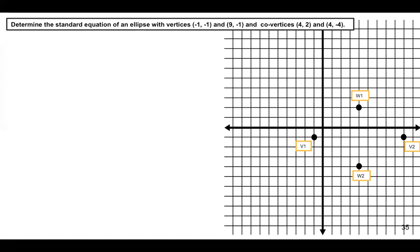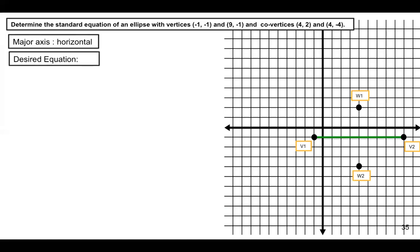To determine the standard equation of an ellipse, we need to identify the orientation of its major axis. Observe that connecting the vertices (negative 1, negative 1) and (9, negative 1) forms the major axis. This means the major axis of the ellipse is horizontal, so we use the equation (x minus h) squared over a squared plus (y minus k) squared over b squared equals 1.